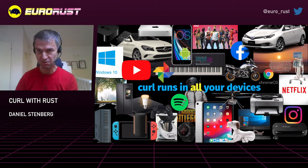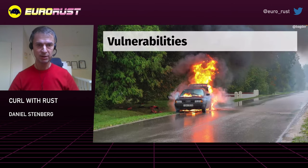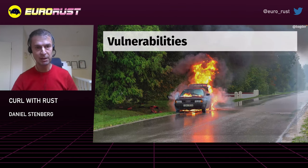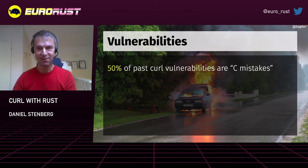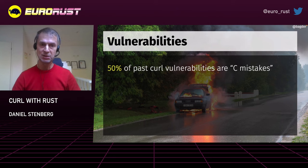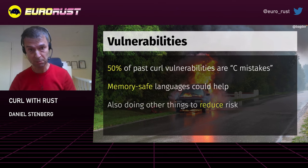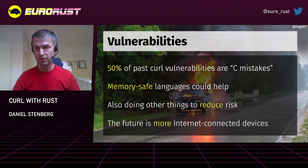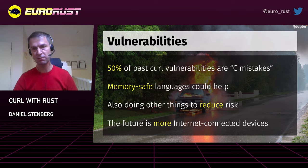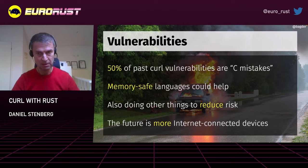The downside of Curl having been written in C is that there might have been a few vulnerabilities over time. Doing it in another language wouldn't have removed all of them, but my assessment says that roughly 50% of them are basically due to what I call C mistakes. Changing that into another language could have helped remove some of those vulnerabilities, making a safer, more secure world. We're going into a world with even more internet-connected devices, and my prediction is that we're going to have many more Curl installations in the future.